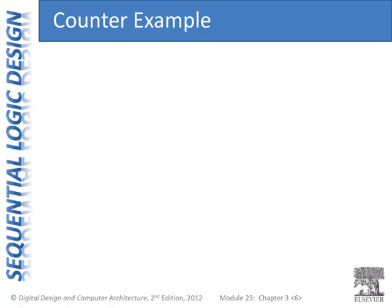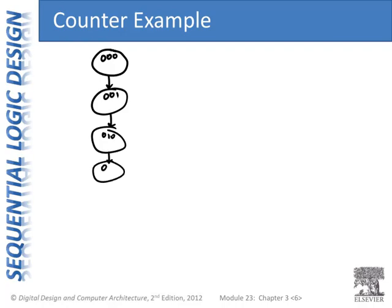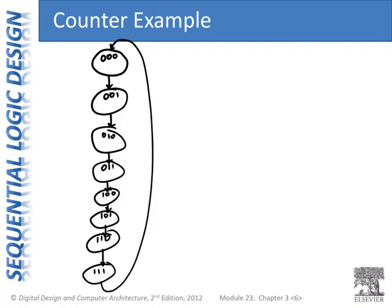Now we'll draw the state transition diagram. The 000 state, 001, 010, 011, and continuing through to 111. This is basically a modulo 8 counter, which means it will never get to 8. It will then go back to 0.